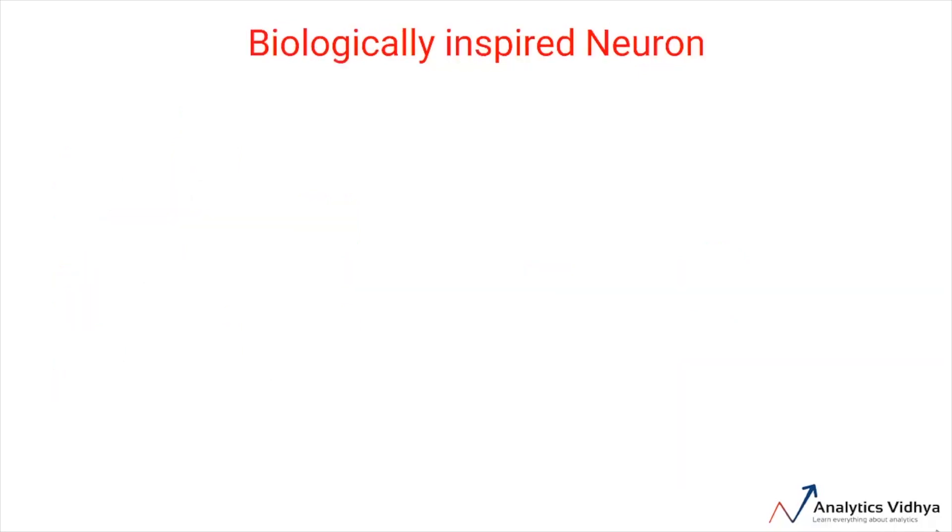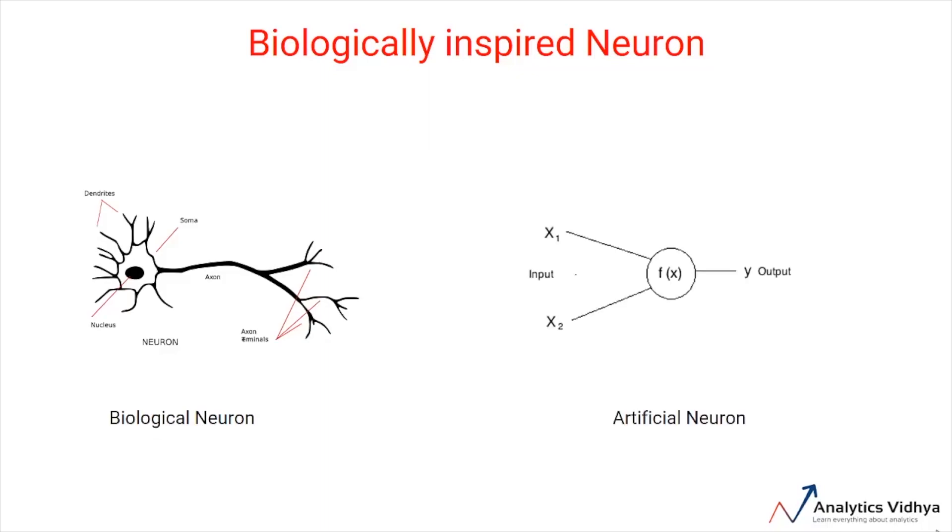A neuron in a neural network can be better understood with the help of biological neurons. An artificial neuron, similar to the biological neuron, receives input from other neurons, performs some processing, and produces an output.